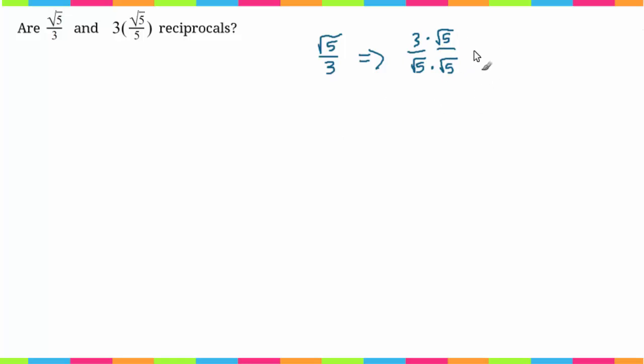So now what is this equal to? In the numerator we have 3√5, and in the denominator, whenever we multiply the radical of a number times itself, we just get the number on the inside. So in this case 5. So √4 times √4 is 4, √3 times √3 is 3, etc.